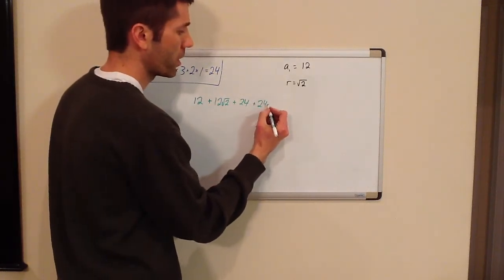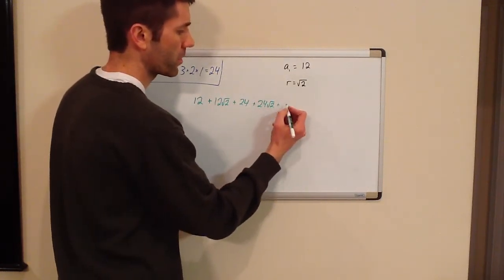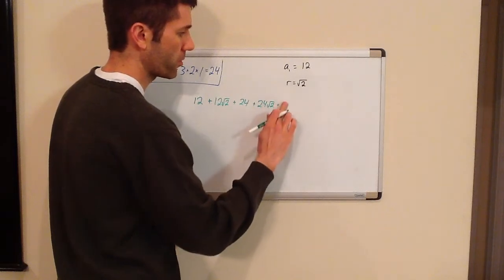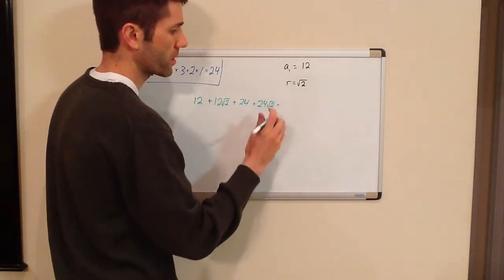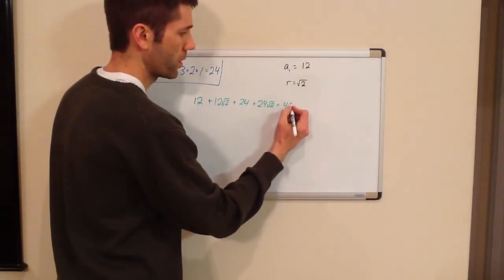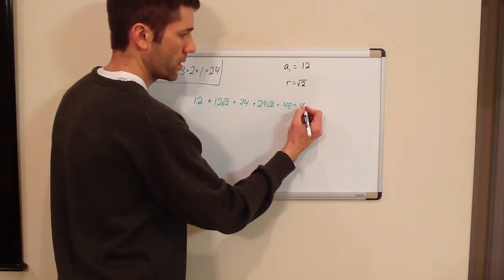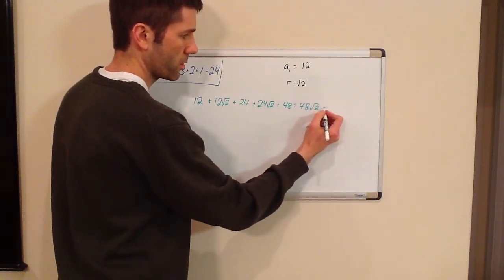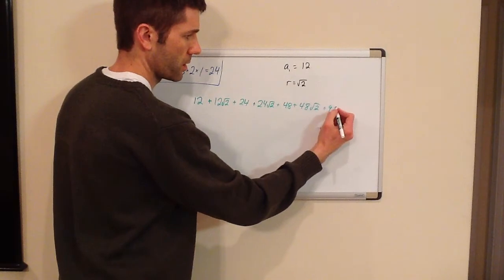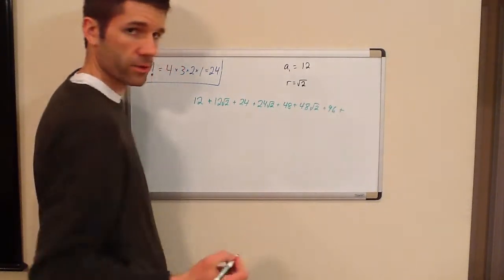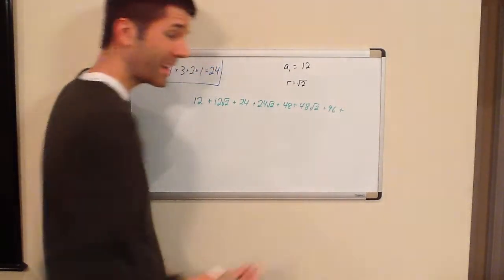And then we're going to add 24, multiply that by the square root of 2. And then we'll multiply that by the square root of 2. That's not going to give us 24, that's going to give us 24 times 2. And so forth until we really get tired of doing this. Now, I'm already tired of doing this.